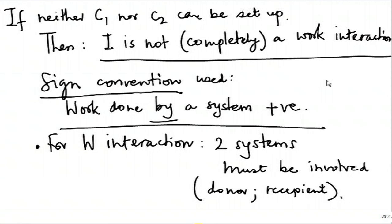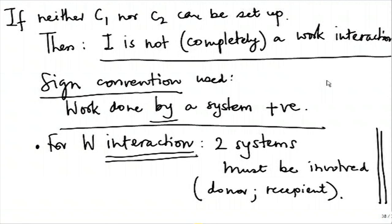This is true not only for the work interaction but for any interaction of the energy kind. Any interaction in thermodynamics — work kind or heat kind — will require two systems: the donor system and the recipient system. The next thing is evaluation of work.